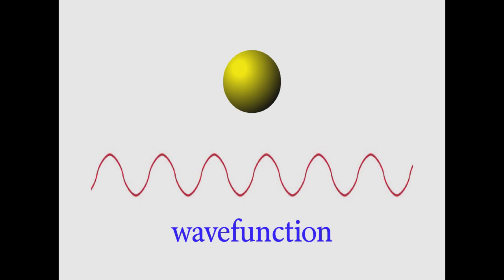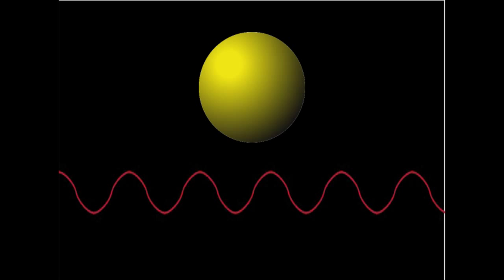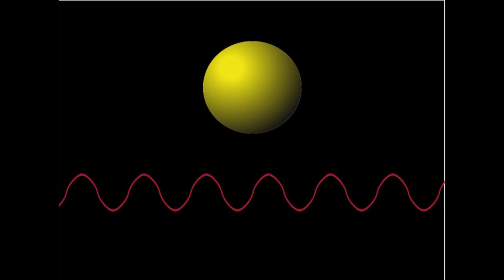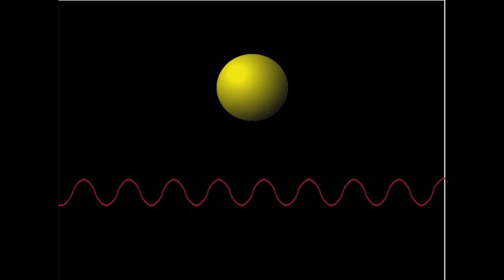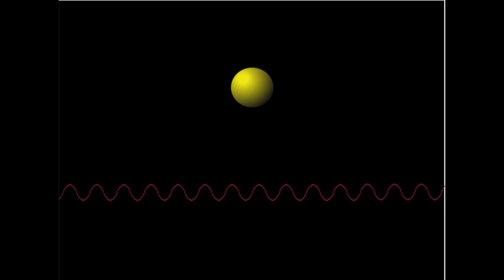For instance, suppose we want to look at the wave function of an electron. If the electron were the only thing in the whole universe, there'd be no restriction on where the electron could be. We'd be equally likely to find it anywhere. So the wave function would stretch out forever, and it would have the same amplitude everywhere we looked.